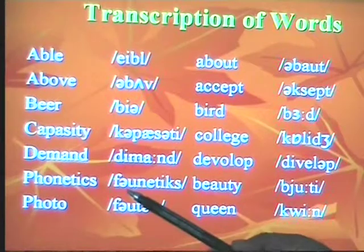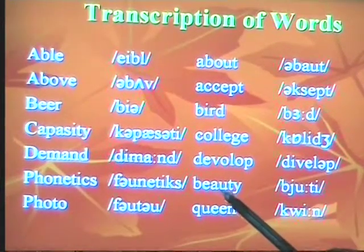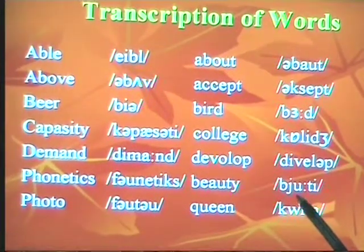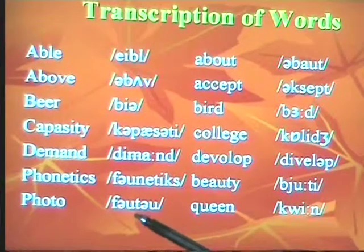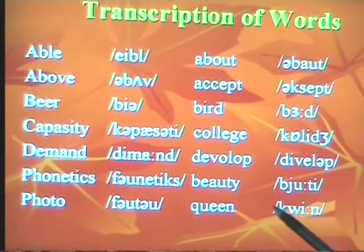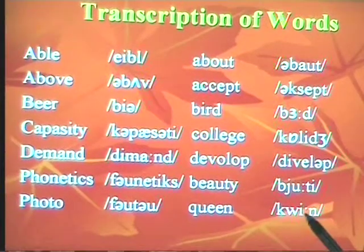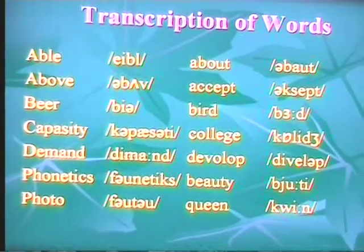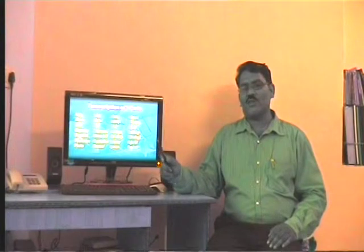Phonetics — P, H, L, L. Beauty — B, Y, U makes 'byoo,' beauty. Even though there is a letter Q, the pronunciation is K here. Queen — K, W, I, N makes 'queen.' This is how one has to transcribe words. There are a number of words for transcription, and candidates need to have knowledge of phonetic symbols and the standard pronunciation.